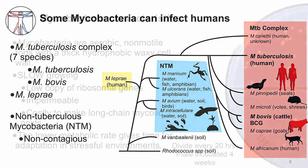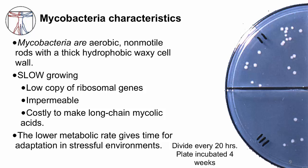Mycobacteria are aerobic, non-motile rods with a thick, hydrophobic, waxy cell wall. They grow very slowly compared to other bacteria. Here is a typical agar plate that we use to grow bacteria — the colonies of Mycobacterium tuberculosis are the white dots on this plate, and it took four weeks to get the colonies to this size. If this plate was growing E. coli, it would look like this after less than one day. MTB divides once every 20 hours, whereas E. coli divides once every 20 minutes under optimal conditions.